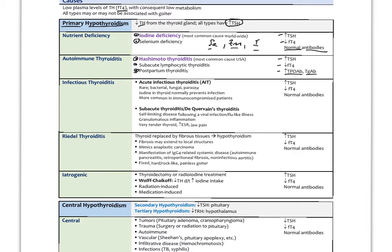Infectious thyroiditis could be acute infectious thyroiditis, which is pretty rare — from bacteria, fungi, or parasites. We think these are associated with low thyroid status because iodine in the thyroid normally prevents infection. When iodine isn't concentrating properly due to low dietary intake, infection is more likely, particularly in immunocompromised patients. This usually causes a painful thyroid enlargement, unlike nutrient deficiency or autoimmune thyroiditis where any goiter is typically painless. The TSH is elevated, free T4 is low, antibodies are normal, and on CBC you might see elevated white cell counts indicating infection.